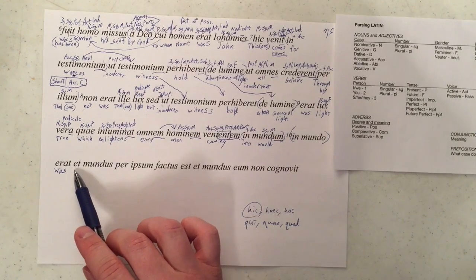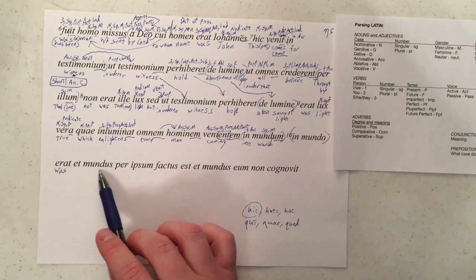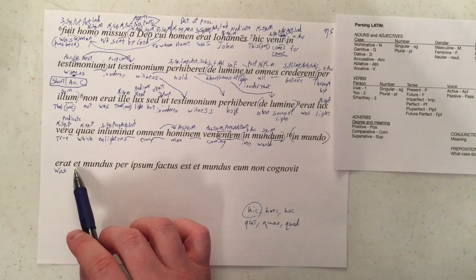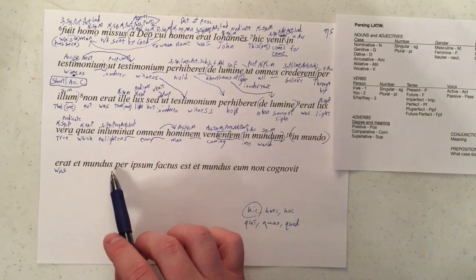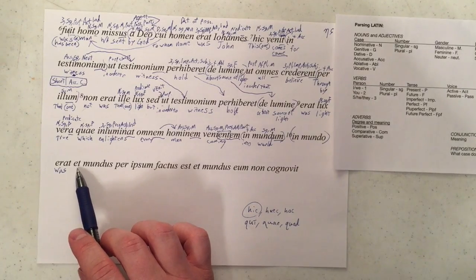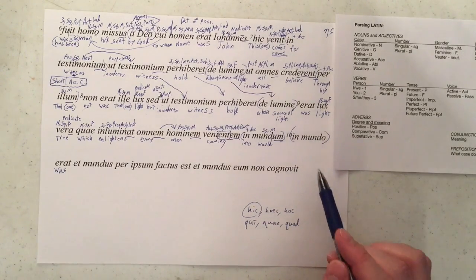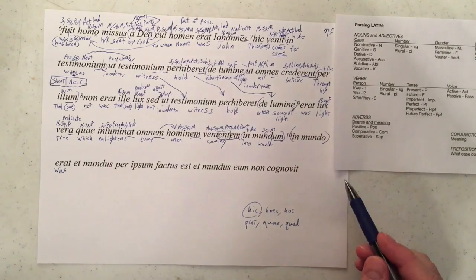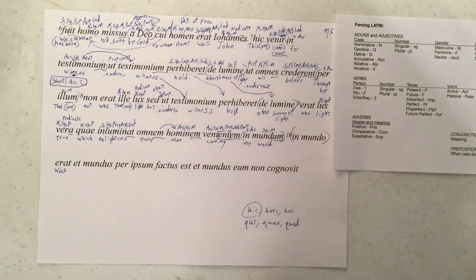We've got an et here, which could be connecting two verbs together, but since mundus is not a verb, that's not happening. So et is connecting this clause with this clause. So our subject has to be somewhere before et. In mundo is a prepositional phrase, so that does not work as our subject. We need to look further back to figure out what that was.